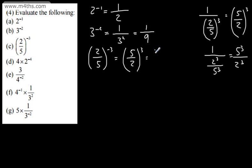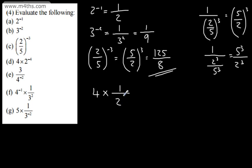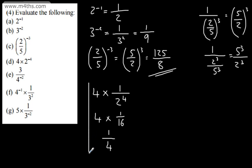If we look at 5 to the power of 3, that's 5 cubed, which is 125. 2 to the positive 3 gives me 8. So the answer is 125 over 8. The next one is going to be 4 multiplied by 1 over 2 to the power of 4. 2 to the power of 4 is going to give me 16. 4 over 16 will simplify to 1 over 4. So all I've done is simply written that as a simplified fraction using the negative power law.